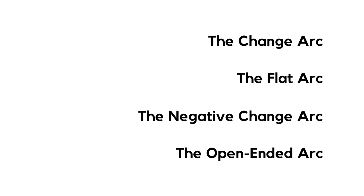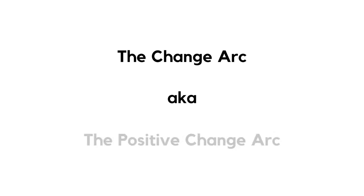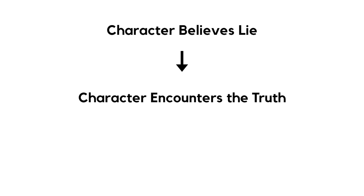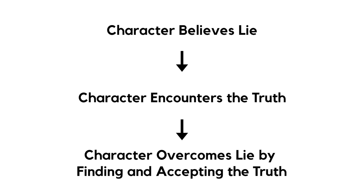First, let's take a look at the most prominent type of character arc — the change arc, also called the positive change arc. As I explained in part 1, your character's need is a result of being internally incomplete because of their lie. This lie will become the main element in the internal change of the character as he or she encounters the truth. The change arc works like this: character believes a lie, character encounters the truth, character overcomes the lie by finding and accepting the truth.